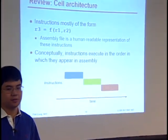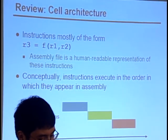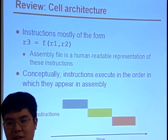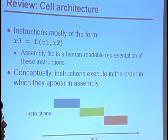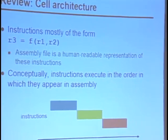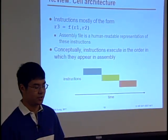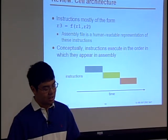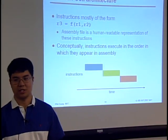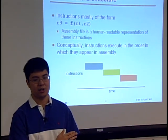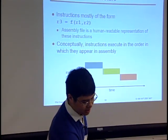Let's continue talking about instruction reordering, which I started last time — I'll start from the beginning this time. On the cell architecture, instructions are mostly of the form: evaluate some function of some of the registers and write the result to some other register. The assembly file, which you get when you run GCC with dash S, is just a human-readable representation of these instructions. You can think of these instructions as executing in series, just in the order in which they appear in the assembly. That should be consistent with the actual behavior of the hardware.